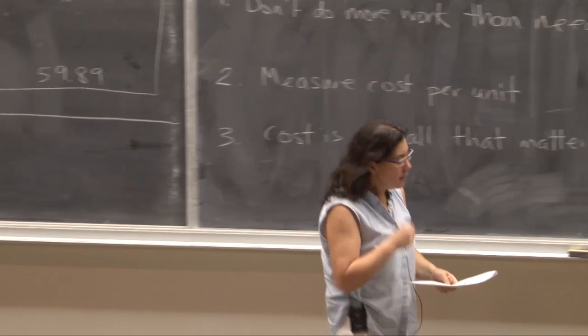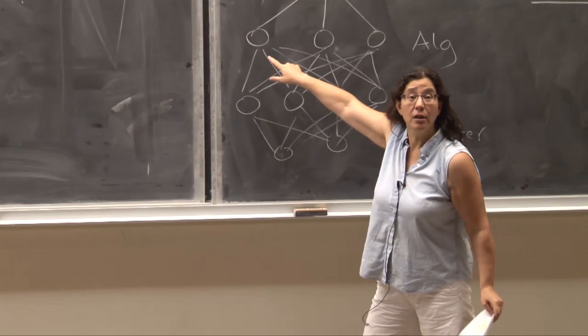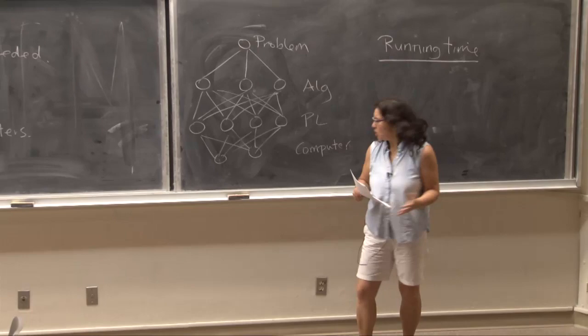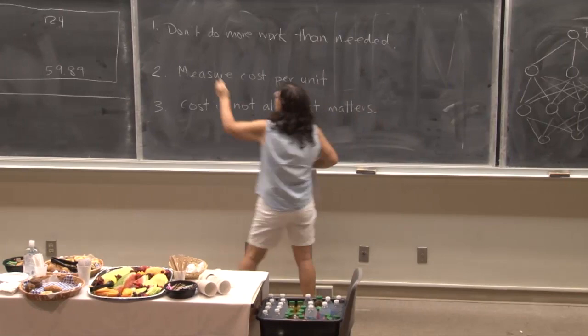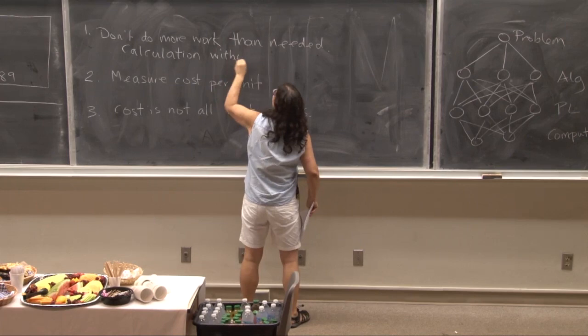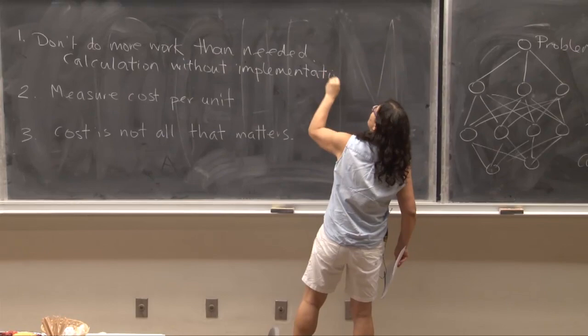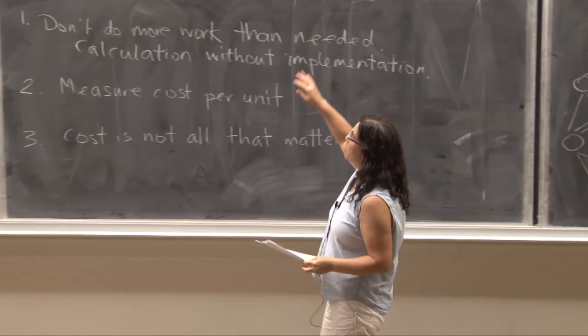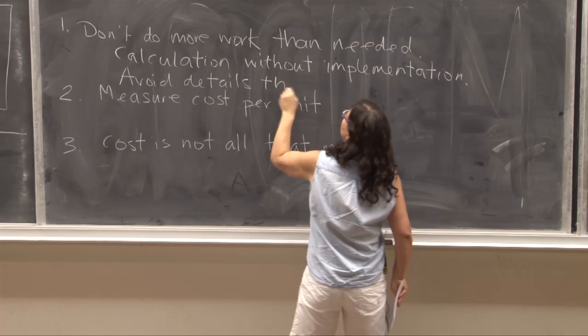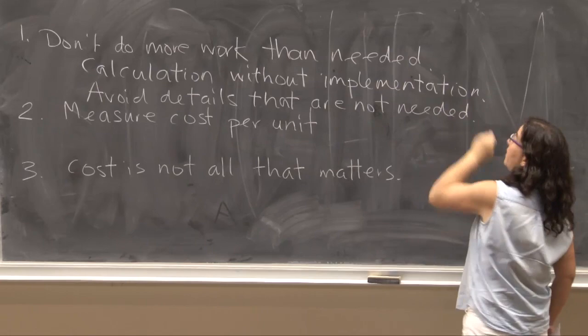So option one is kind of like trying to figure out which algorithm is best by implementing it in all the programming languages, running it on all the computers, figuring out which ones it was the fastest, and then saying that's the one we're going to go with. That's way too much work. So let's add a little bit of detail to this not doing more work than needed. In particular we're going to make our calculations without actually building something or implementing something. And in order to not do more work than needed we're going to avoid details that are not needed.